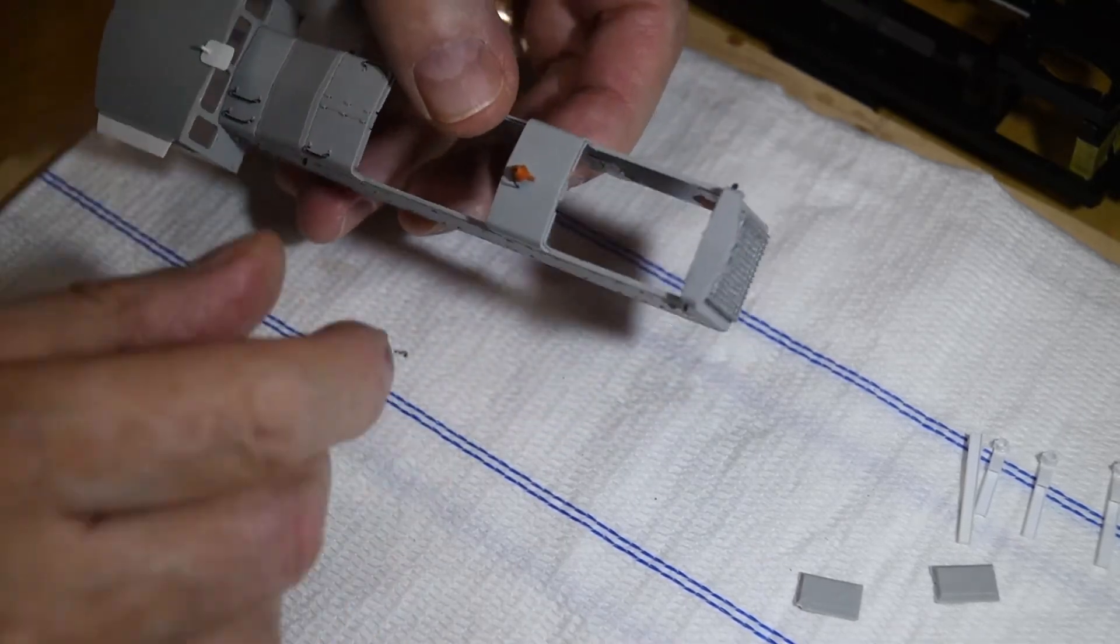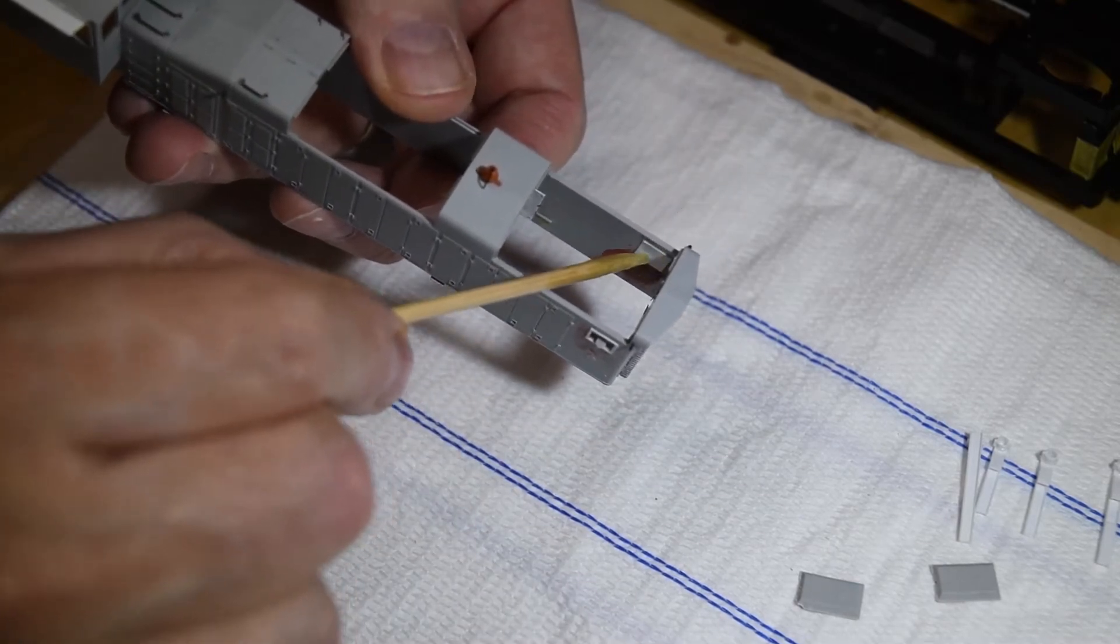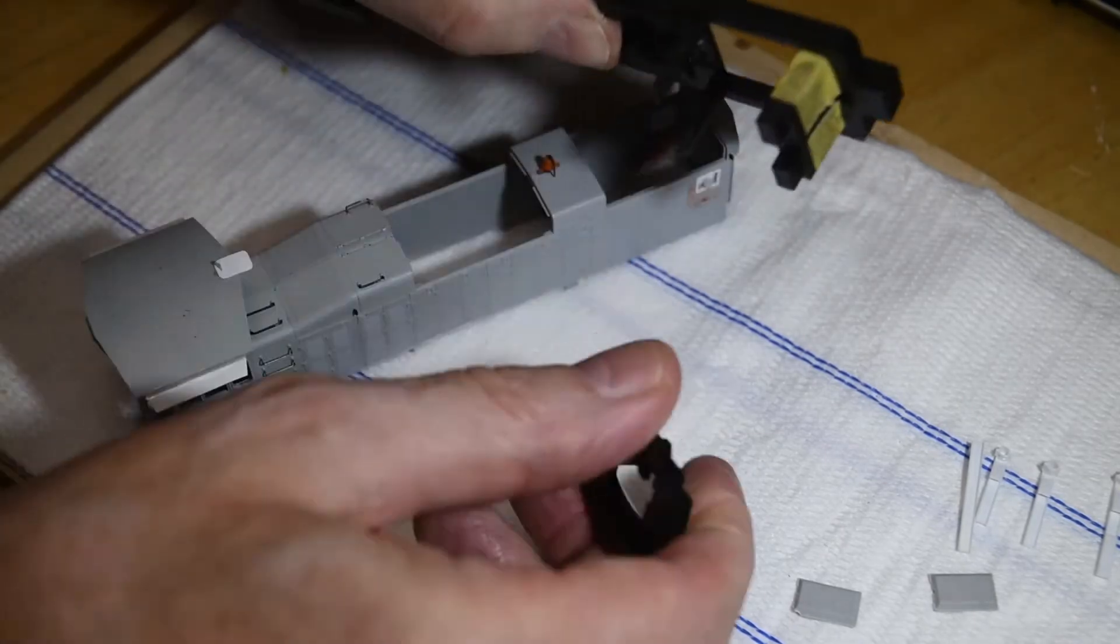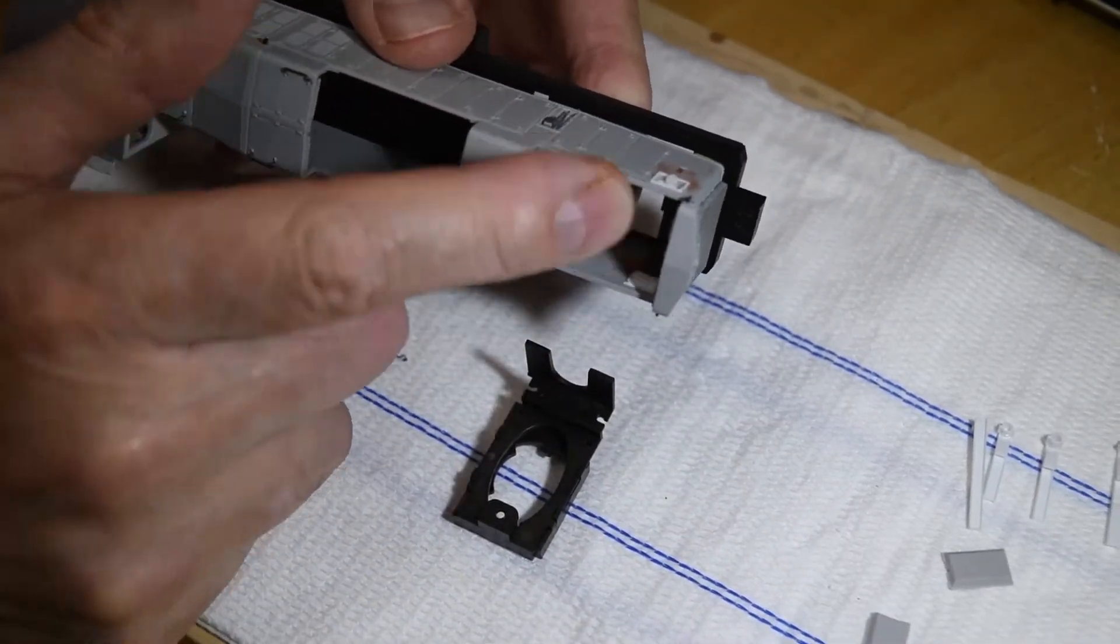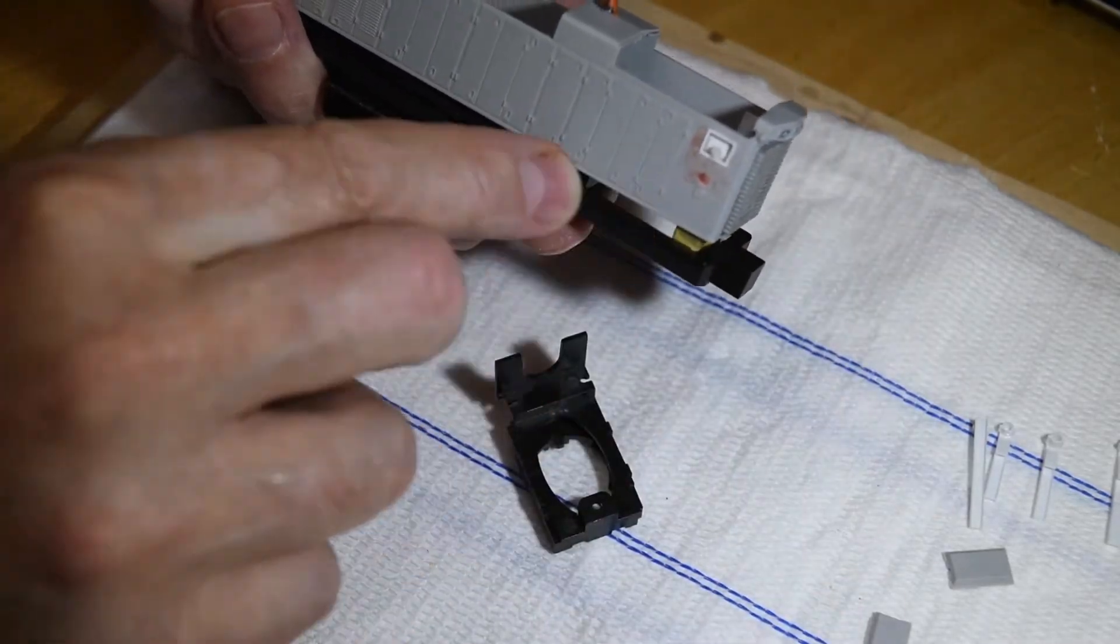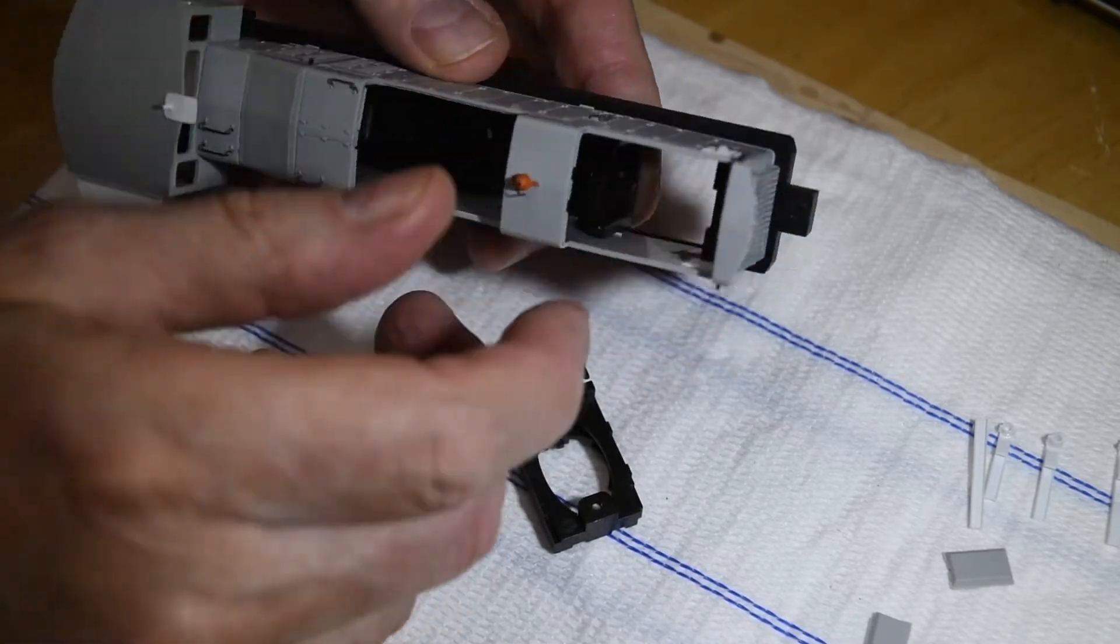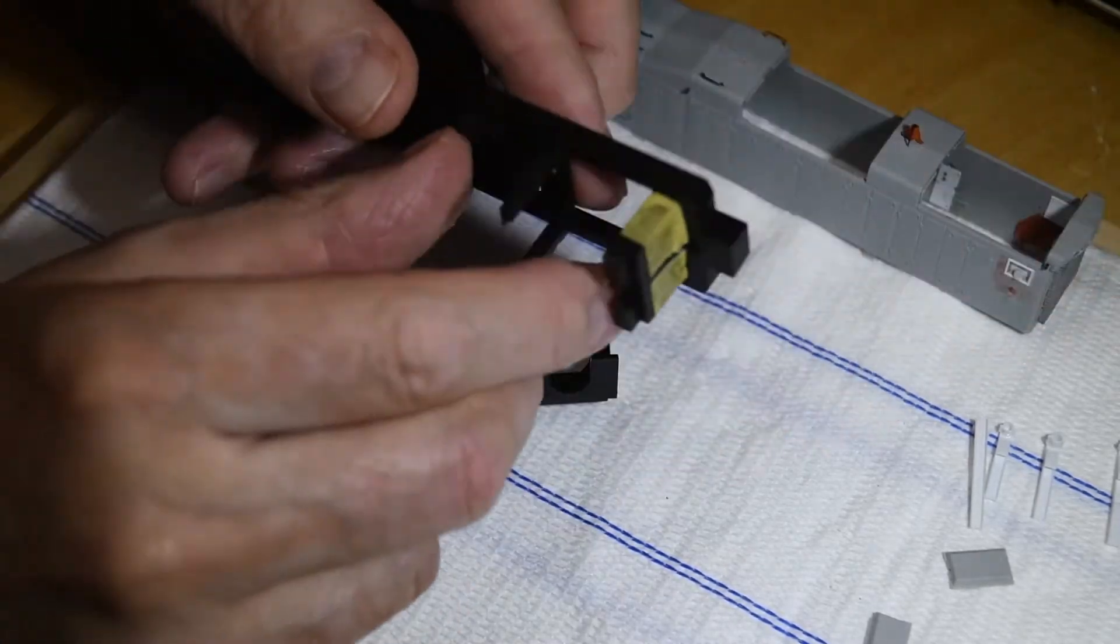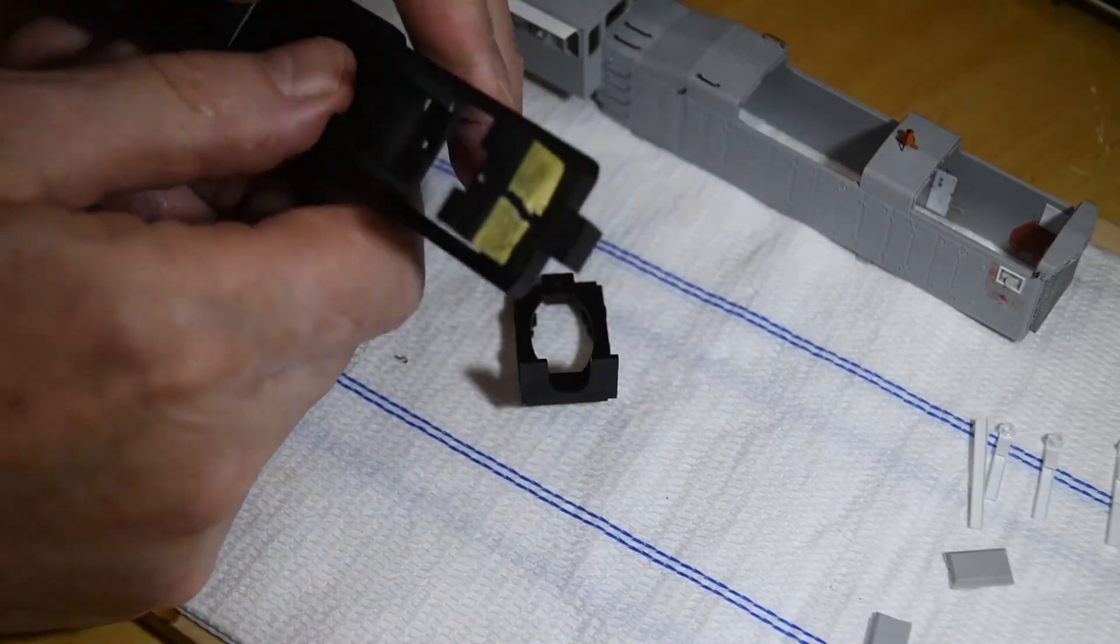Now the only problem is, even with the 10 thou plate back here, I'm going to have issues fitting it over the boss on the frame. I can't seat the long hood down on the frame without bowing out the side. So what I'm going to do is just file down 10 thou or 15 thou on each side so it'll slip up inside.